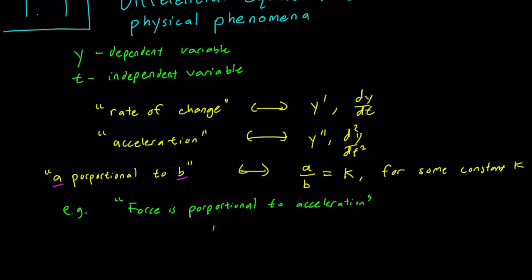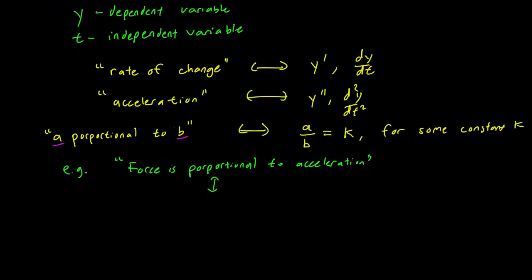And this typically means that the force and acceleration of an object are related. If you double the amount of force applied to a bowling ball, you expect the bowling ball to accelerate twice as fast. And in mathematical terms, F over a is constant, where F is the force and a is the acceleration.